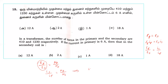Current in secondary equals (410/1230) times 6 ampere. Since 1230 divided by 410 equals 3, the current in the secondary equals 6 divided by 3, which equals 2 ampere. The correct answer is 2 ampere.